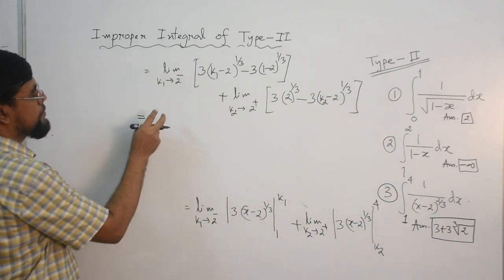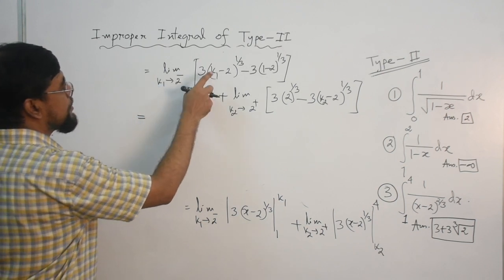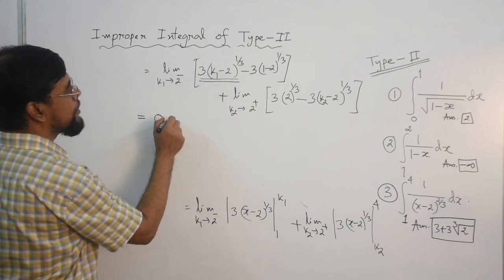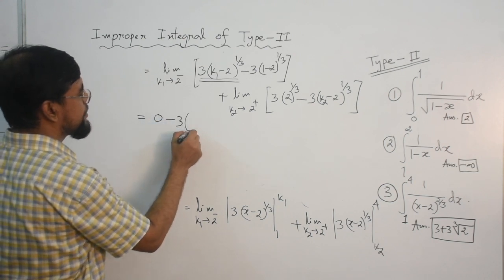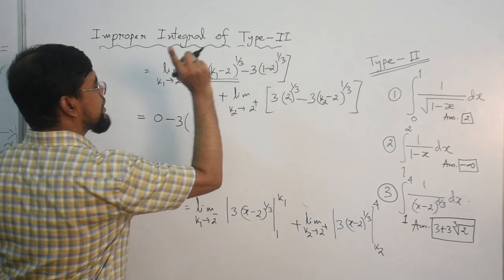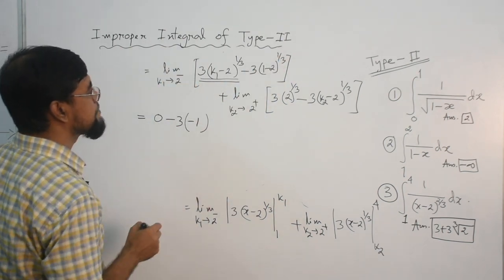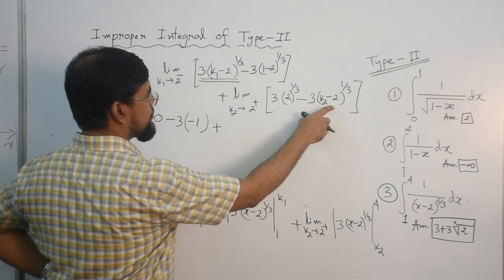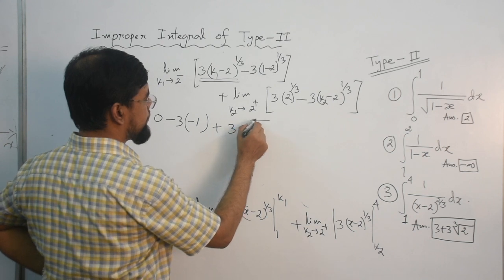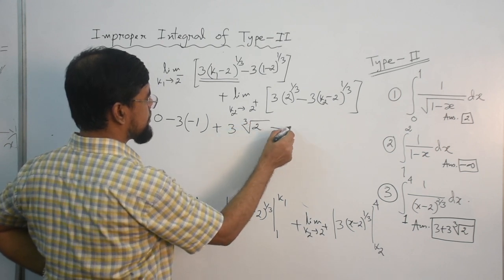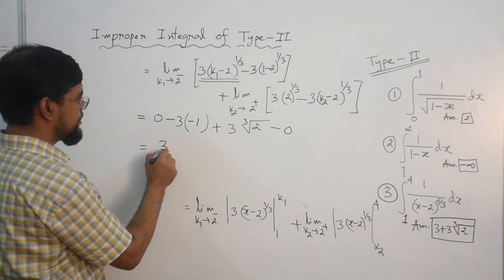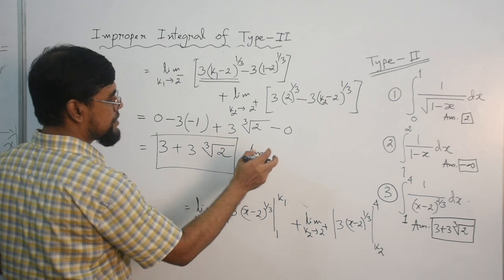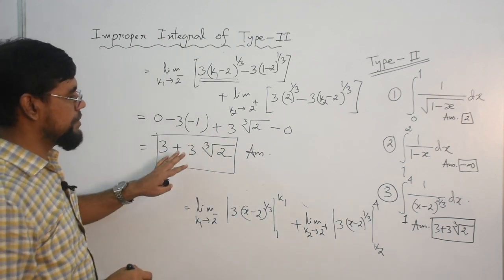When k1 → 2, k1 − 2 → 0, so 3(k1−2)^(1/3) → 0. That gives 0 − (−3) = 3. For the second integral, limit k2 → 2⁺ of [3(x−2)^(1/3)] from k2 to 4. When k2 → 2, that term goes to 0. Putting the upper limit 4 gives 3(4−2)^(1/3) = 3∛2. So the total result is 3 + 3∛2. This integral converges to 3 + 3∛2.